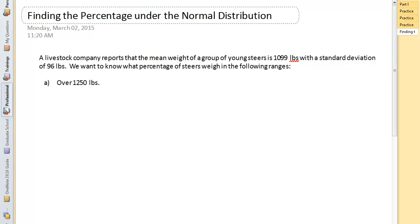Okay, so I had a few questions about finding the percentage under a normal distribution. This new video is going to address that. The problem is: a livestock company reports that the mean weight of a group of young steers is 1,099 pounds with a standard deviation of 96 pounds. We want to know what percentage of steers weigh in the following ranges. The first one is over 1,250 pounds.